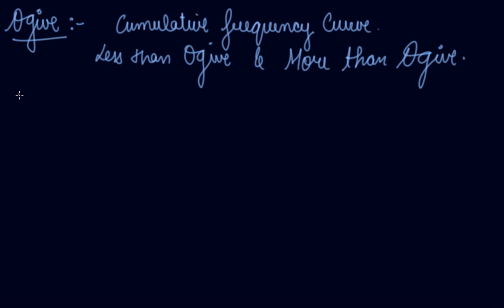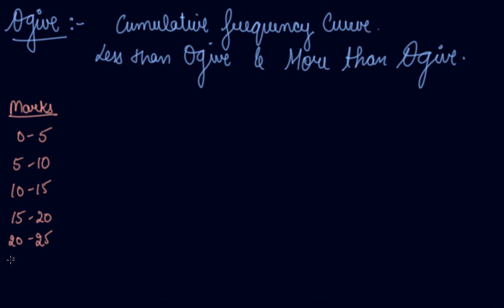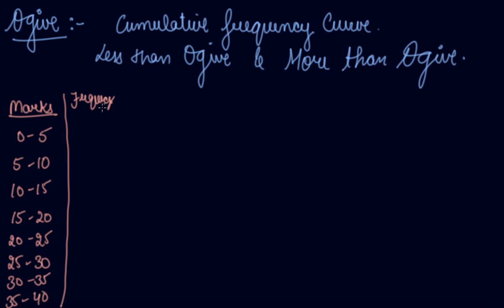Let's take an example and understand. The class intervals are 0 to 5, 5 to 10, 10 to 15, 15 to 20, 20 to 25, 25 to 30, 30 to 35, and 35 to 40. And you are given frequencies which are 4, 6, 10, 10, 25, 22, 18, and 5.